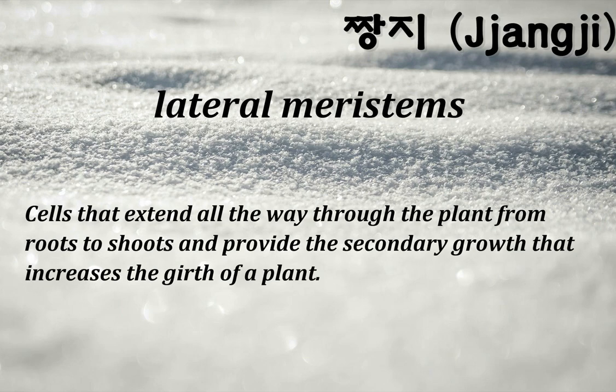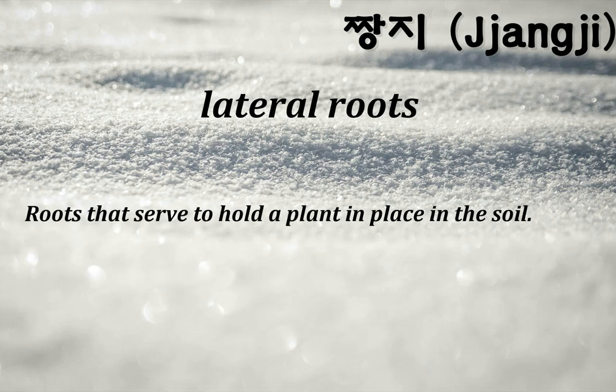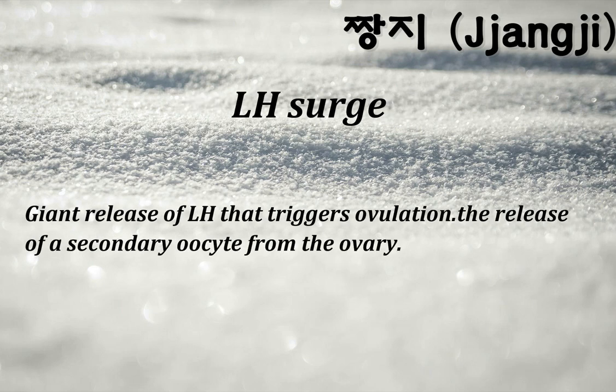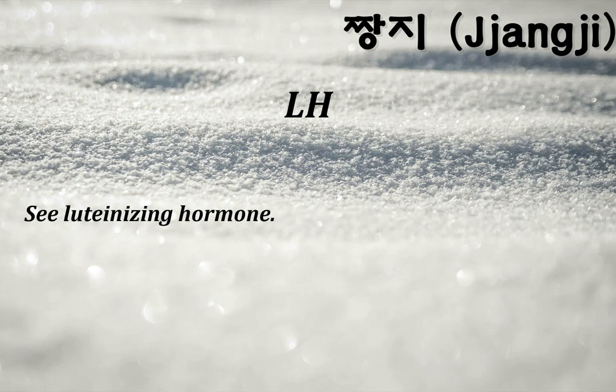Lateral meristems: cells that extend all the way through the plant from roots to shoots and provide the secondary growth that increases the girth of a plant. Lateral roots: roots that serve to hold a plant in place in the soil. Leading strand: the continuous strand produced during DNA replication. LH surge: a giant release of LH that triggers ovulation — the release of a secondary oocyte from the ovary. LH: luteinizing hormone.